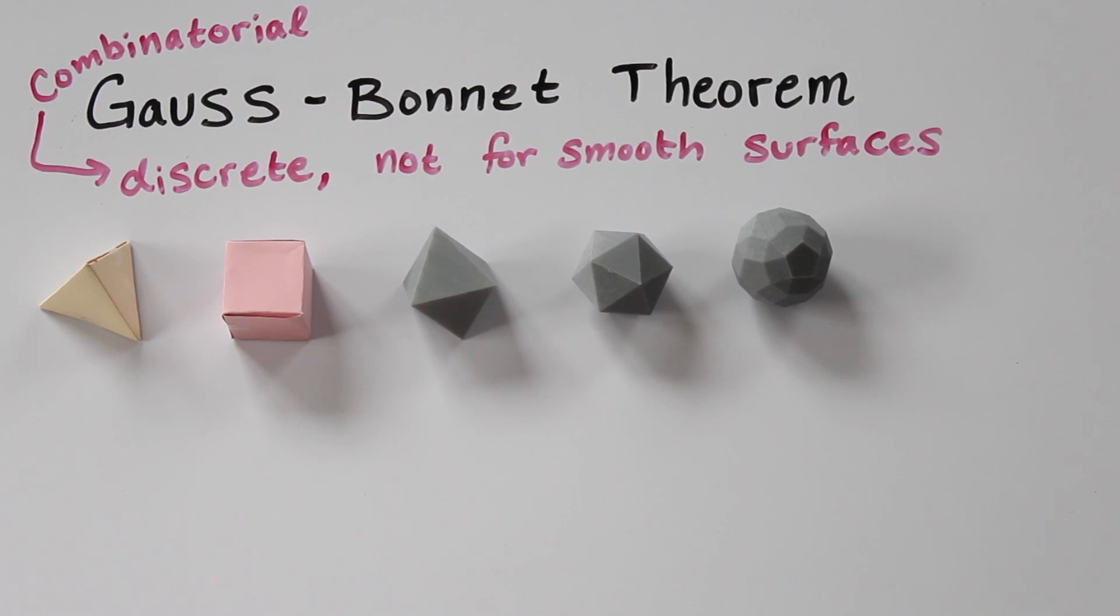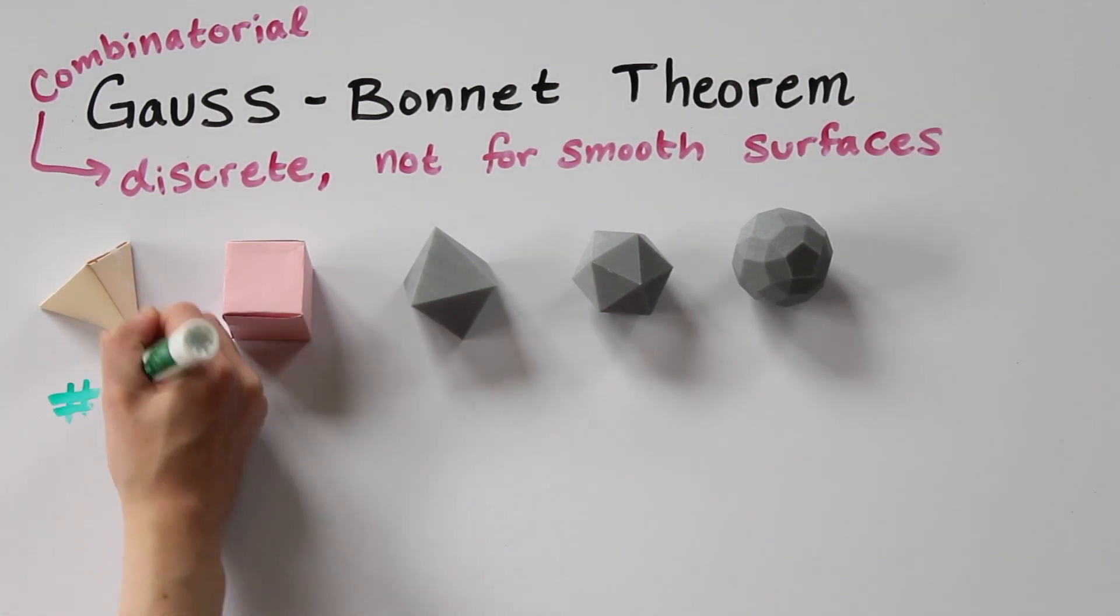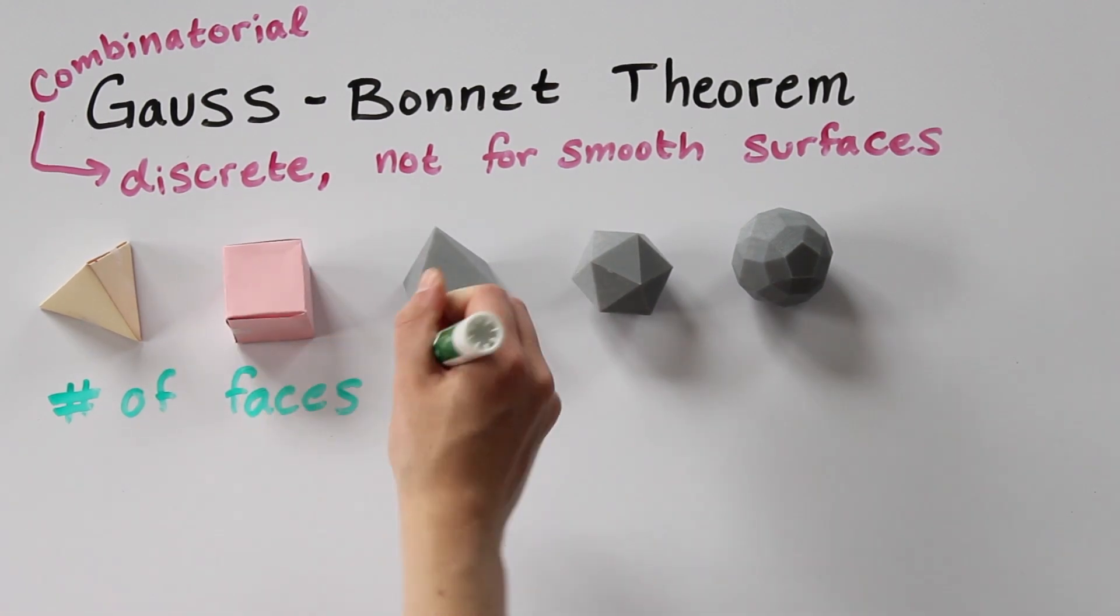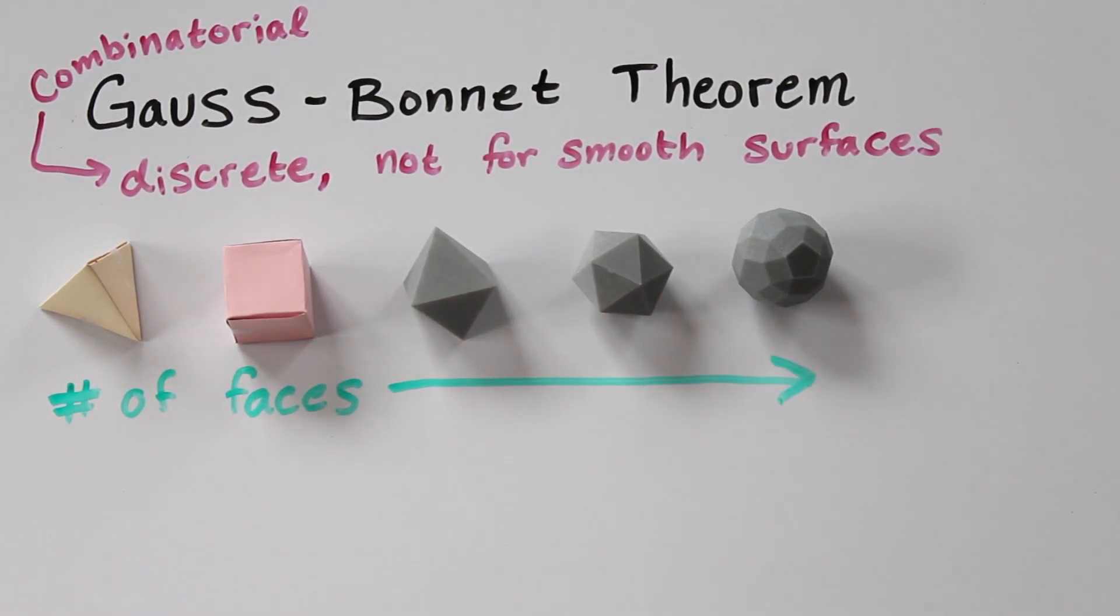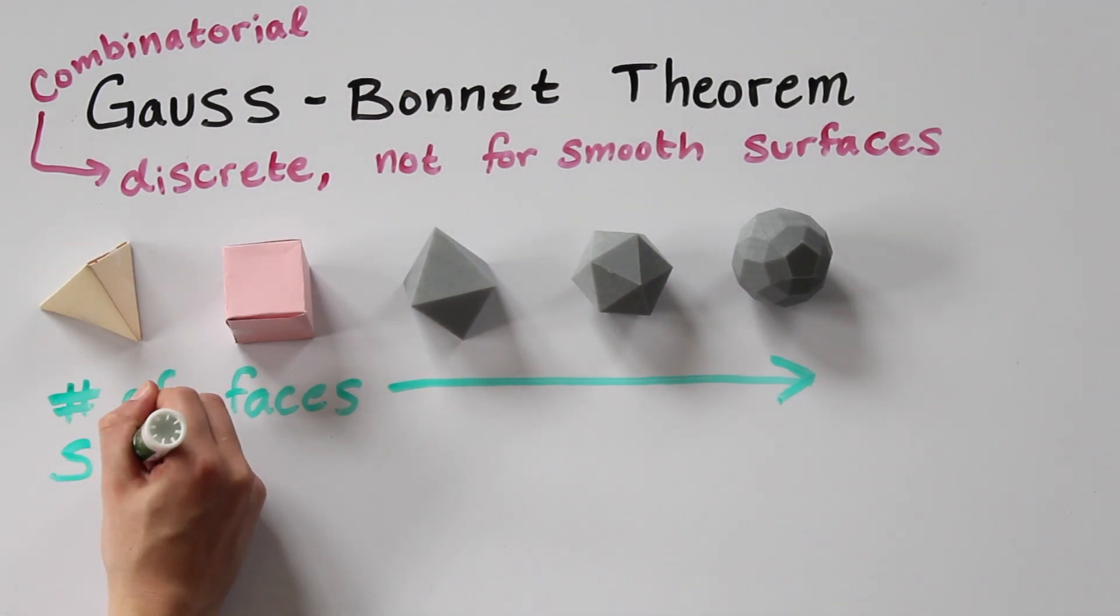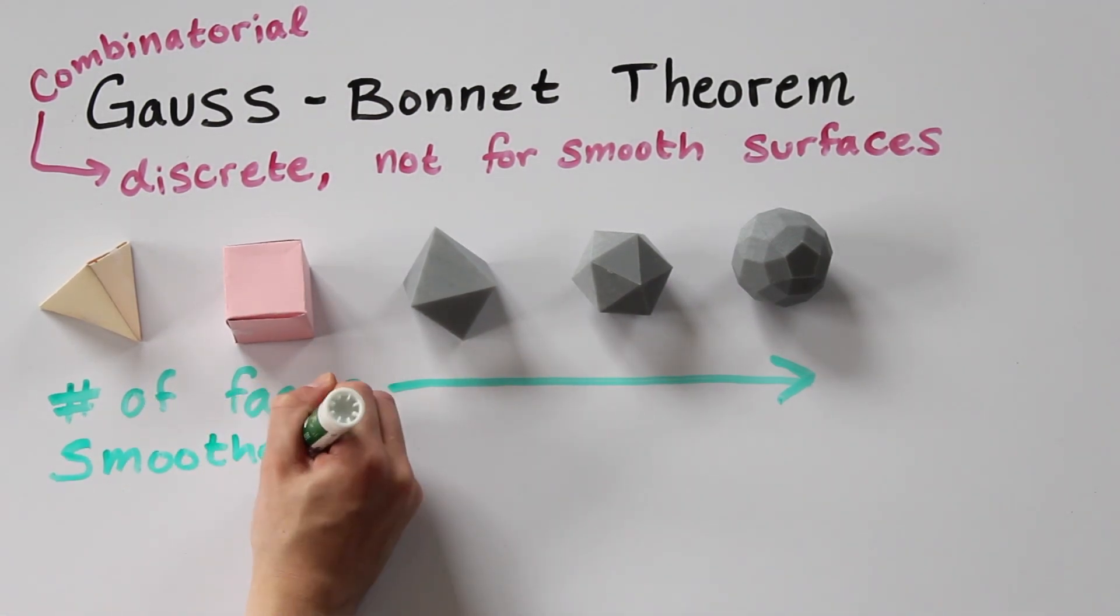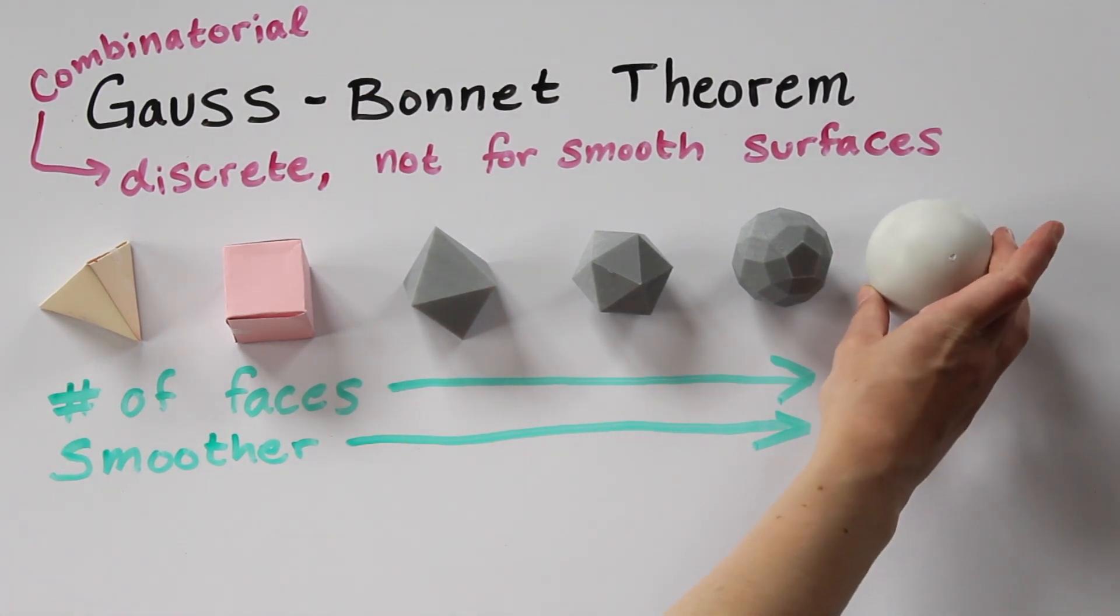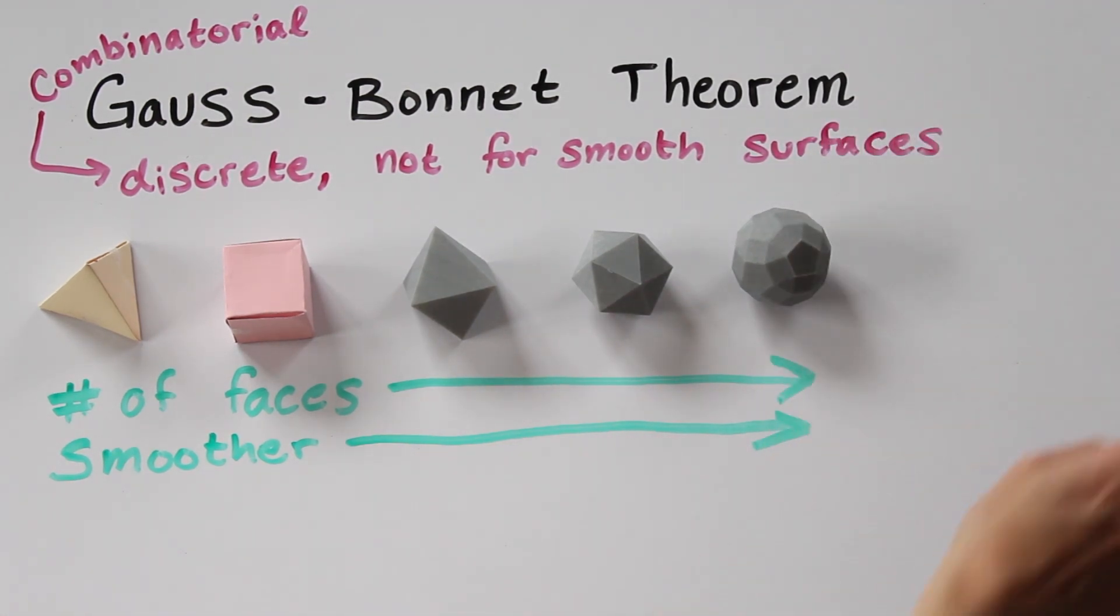The classic version of the Gauss-Bonnet theorem is about smooth surfaces. However, as we increase the number of faces in the polyhedral surface, you may notice that the surface gets rounder and smoother. In this way, we can approach the classic version of the Gauss-Bonnet theorem from the combinatorial version.